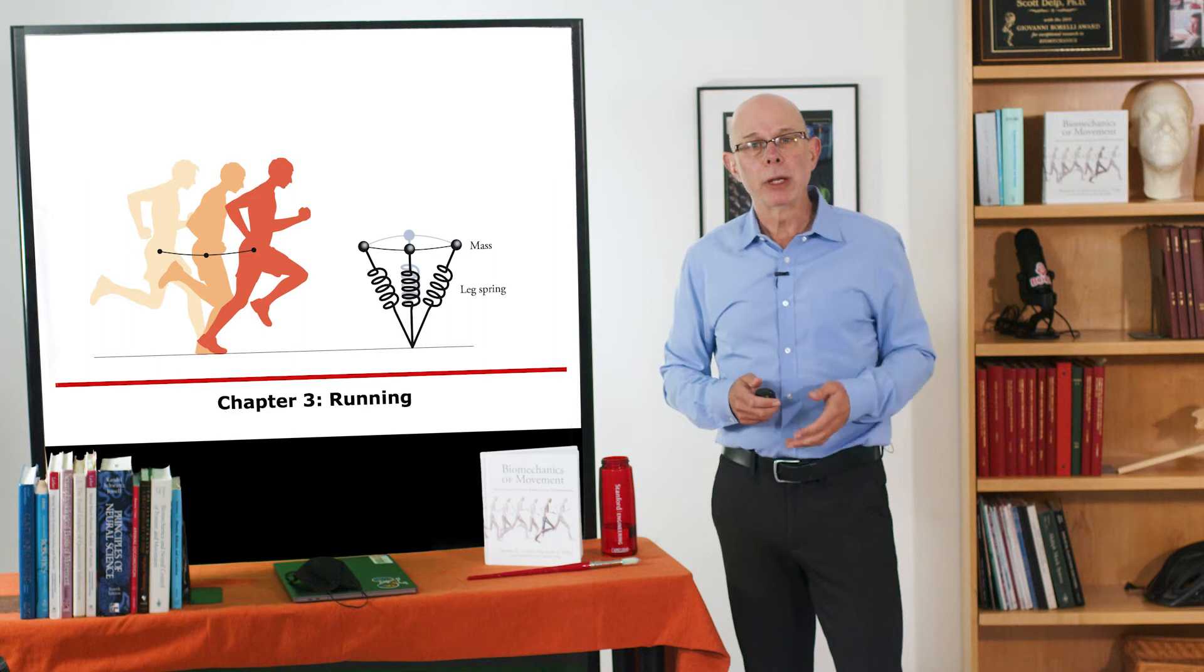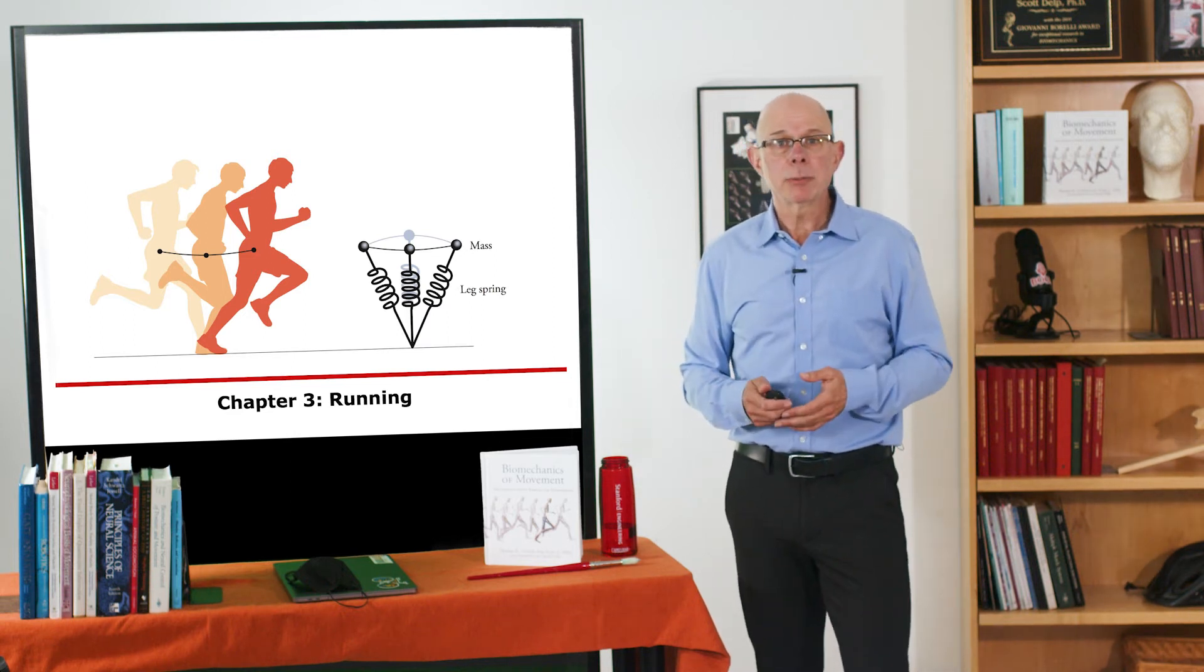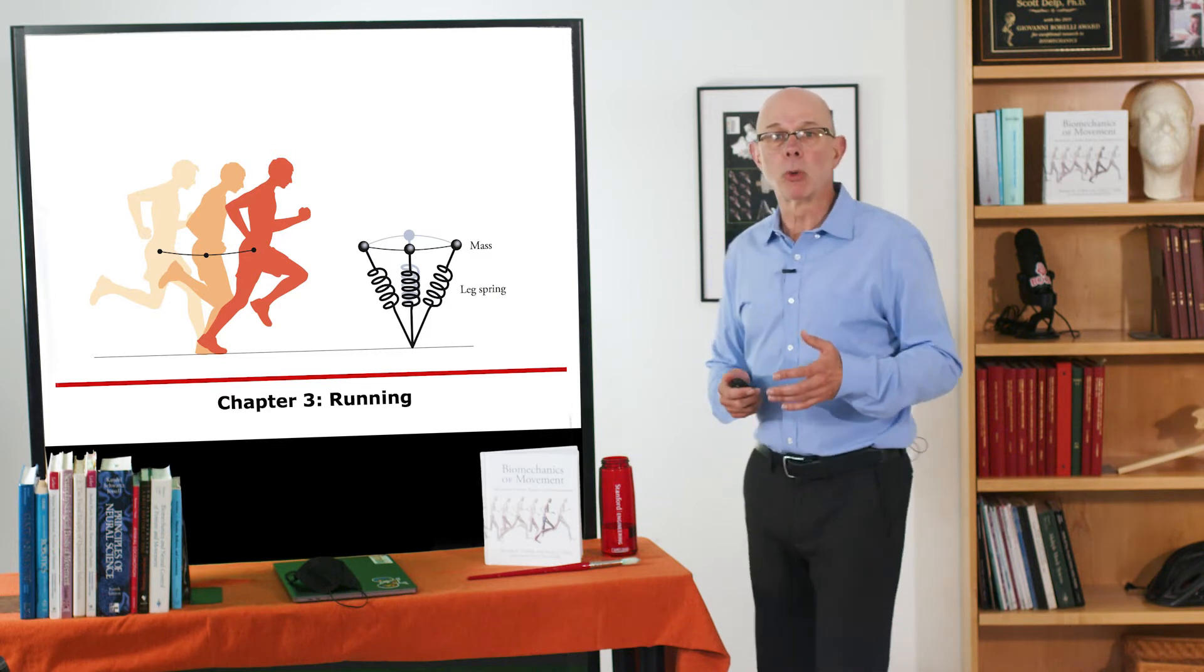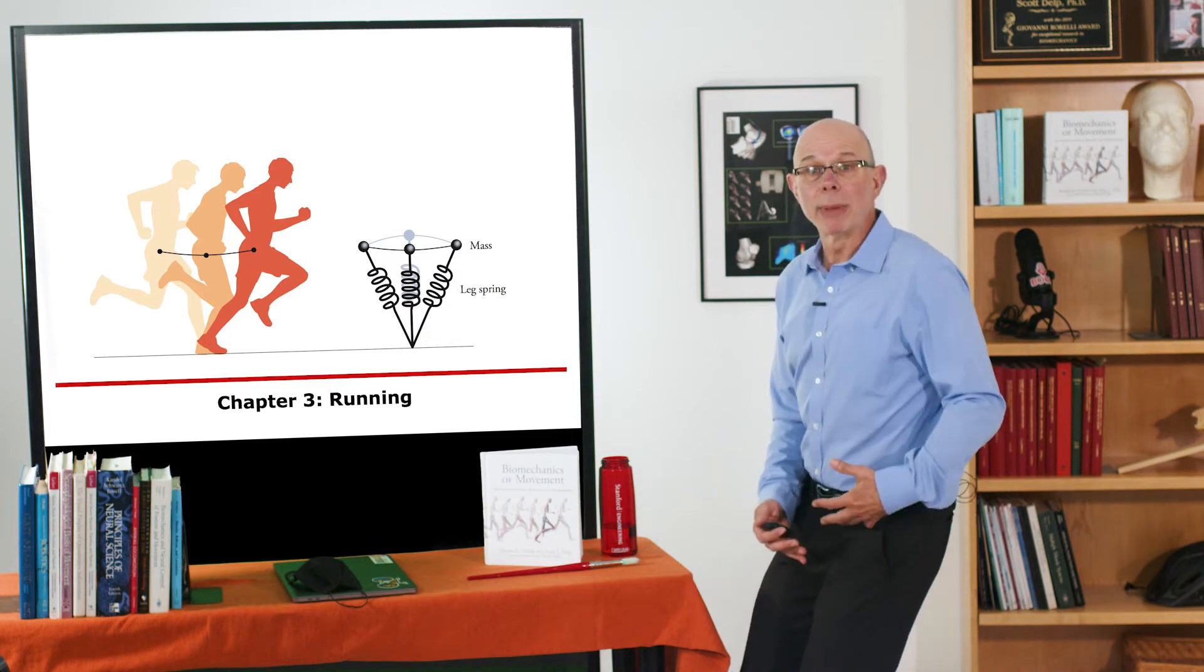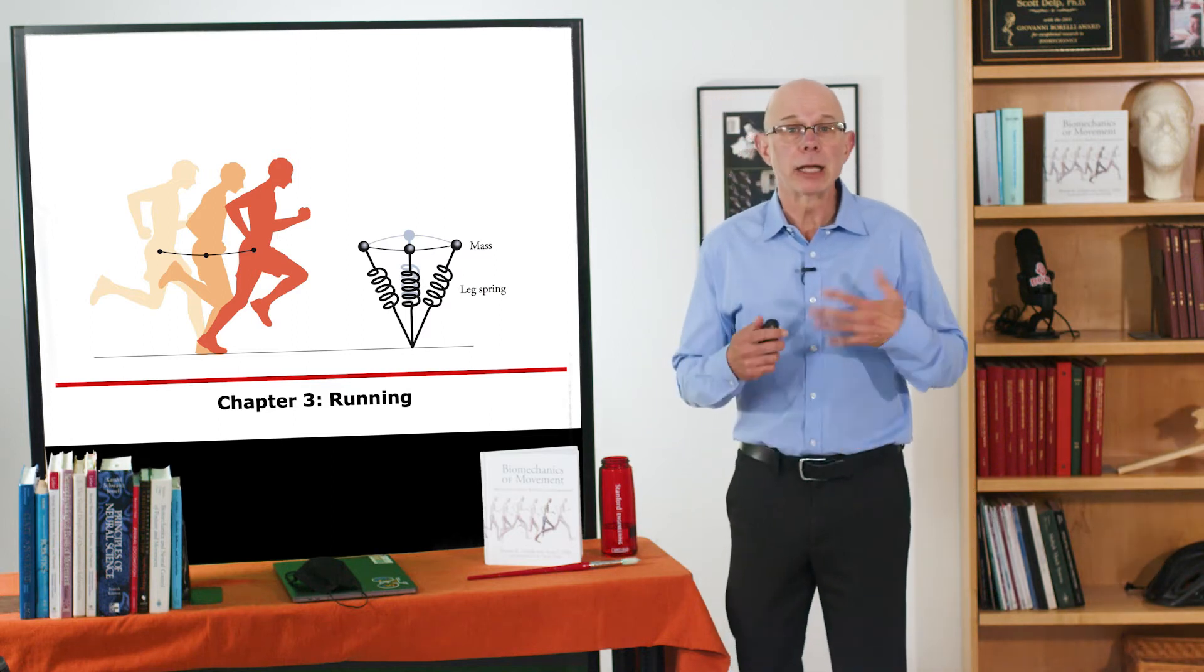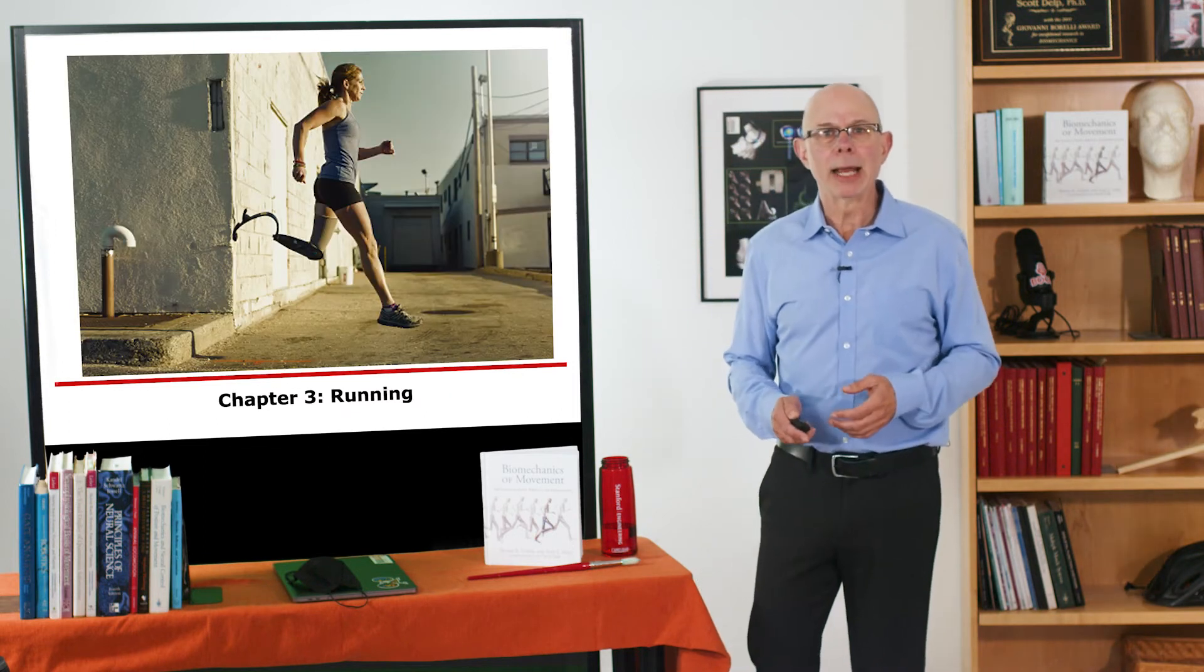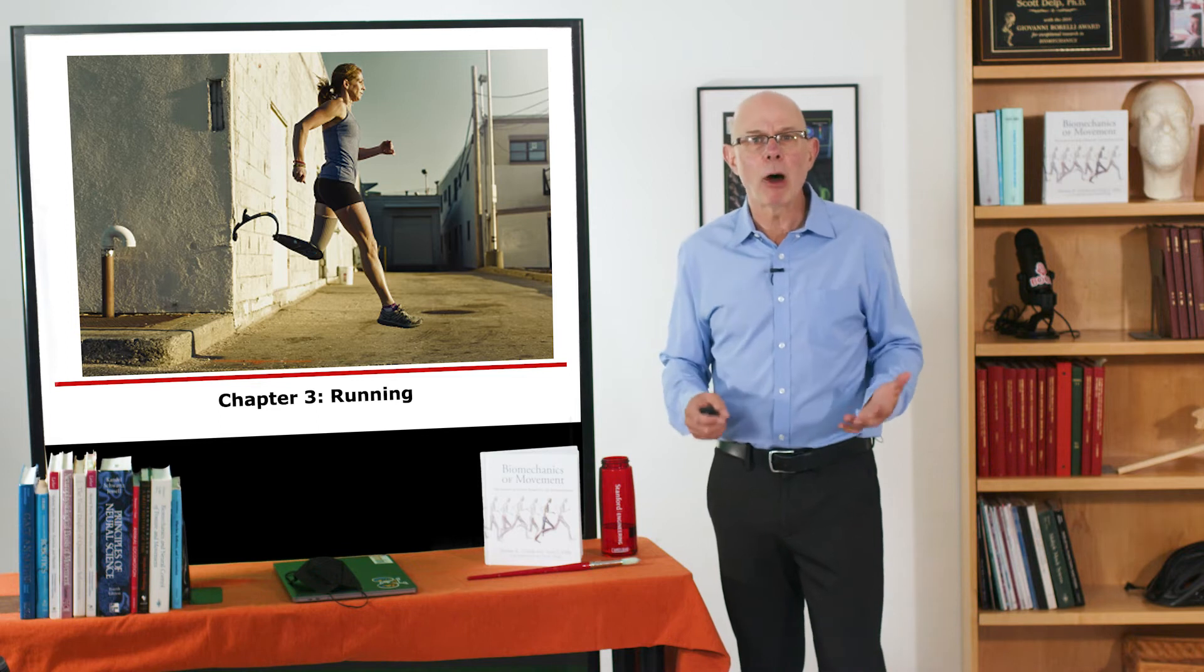In Chapter 3, we'll cover running, and a different model is helpful. In this model, we characterize the leg as a spring. As your mass center drops during the stance phase of gait, we absorb energy in that leg spring. That energy is then released as we move into the flight phase of running. Understanding the dynamics of running on a springy leg is surprisingly powerful.